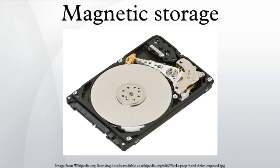In old computers, magnetic storage was also used for primary storage in the form of magnetic drum, core memory, core rope memory, thin film memory, twister memory, or bubble memory. Unlike modern computers, magnetic tape was also often used for secondary storage.